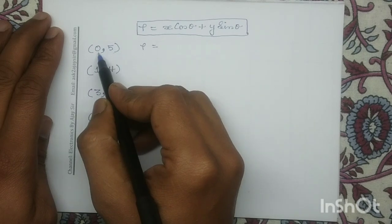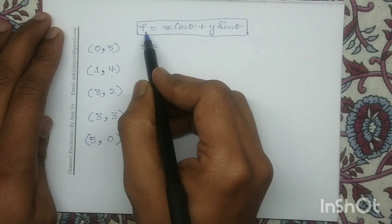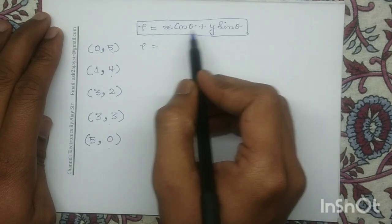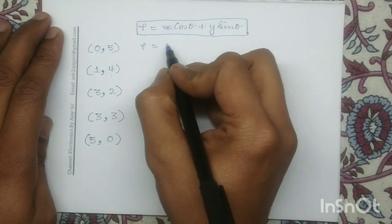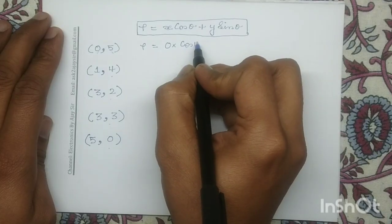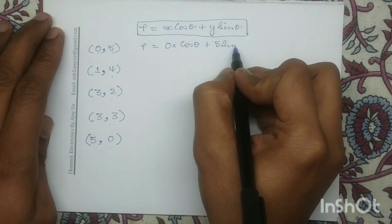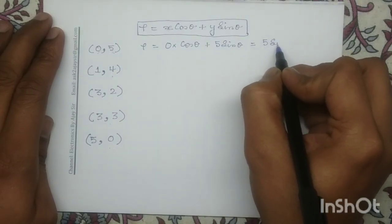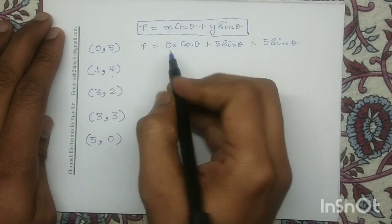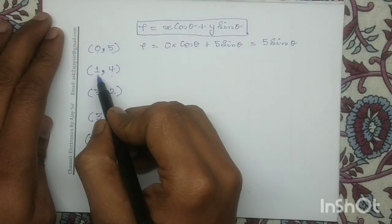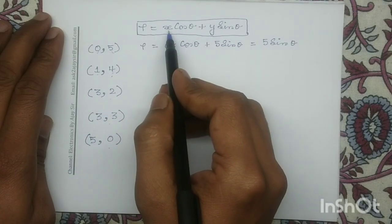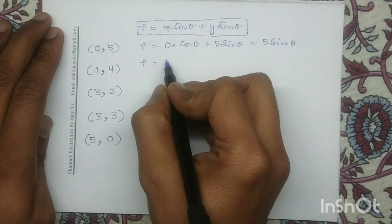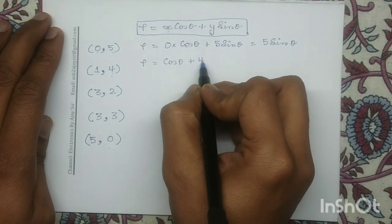For point (0,5), x = 0 and y = 5. Substituting into ρ = x·cos(θ) + y·sin(θ), we get ρ = 0·cos(θ) + 5·sin(θ), which reduces to ρ = 5·sin(θ). Similarly, for point (1,4), x = 1 and y = 4, so the equation becomes ρ = cos(θ) + 4·sin(θ).